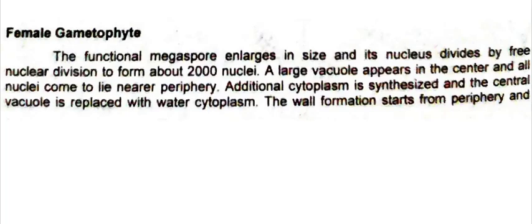Then cytoplasm is produced and this cytoplasm replaces the central vacuole, meaning that instead of the vacuole, cytoplasm is present in the center. After this, in the nuclei arranged on the peripheral side of the germinating megaspore, wall formation around these nuclei starts, and this wall formation proceeds from the outer side toward the center of the megaspore.